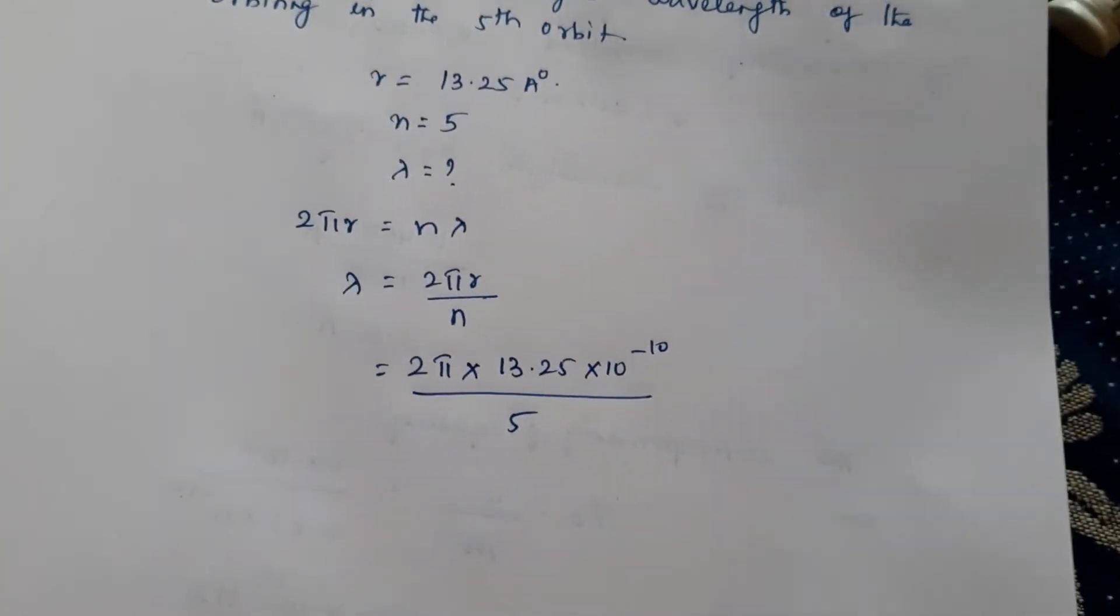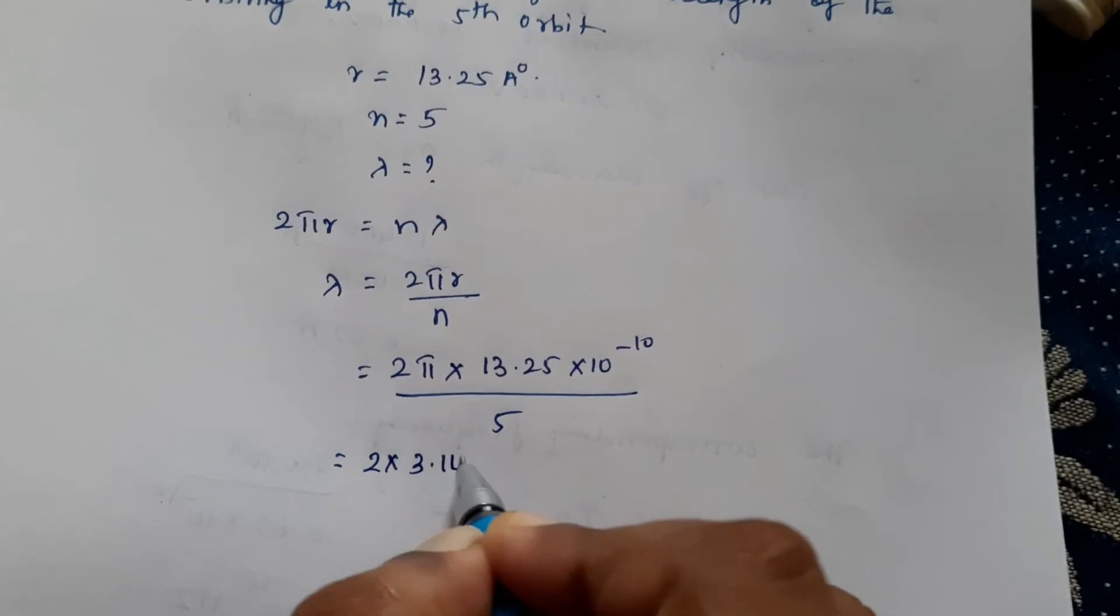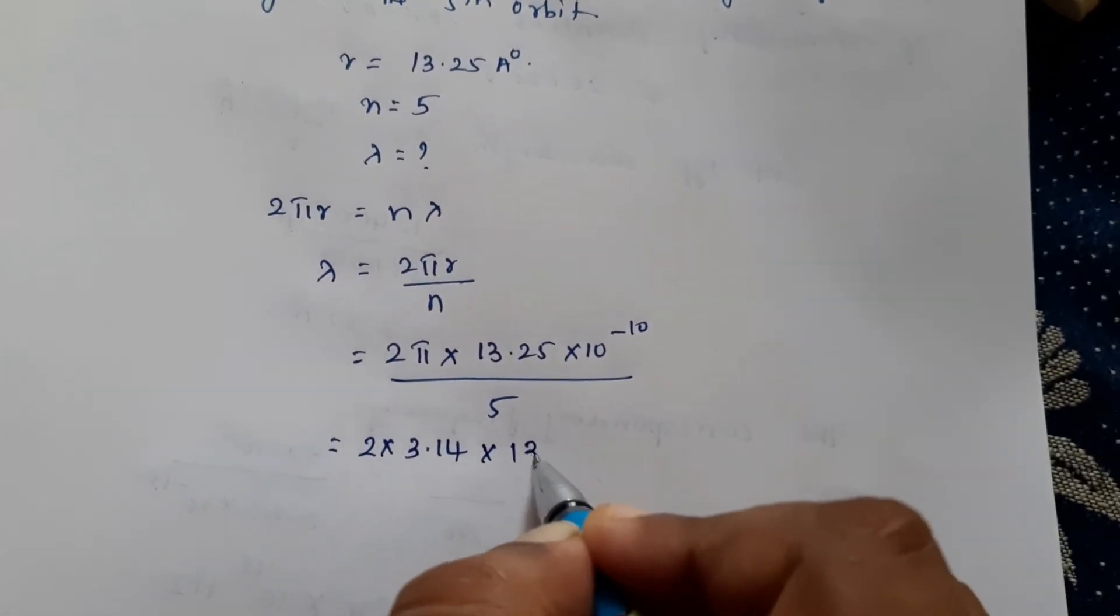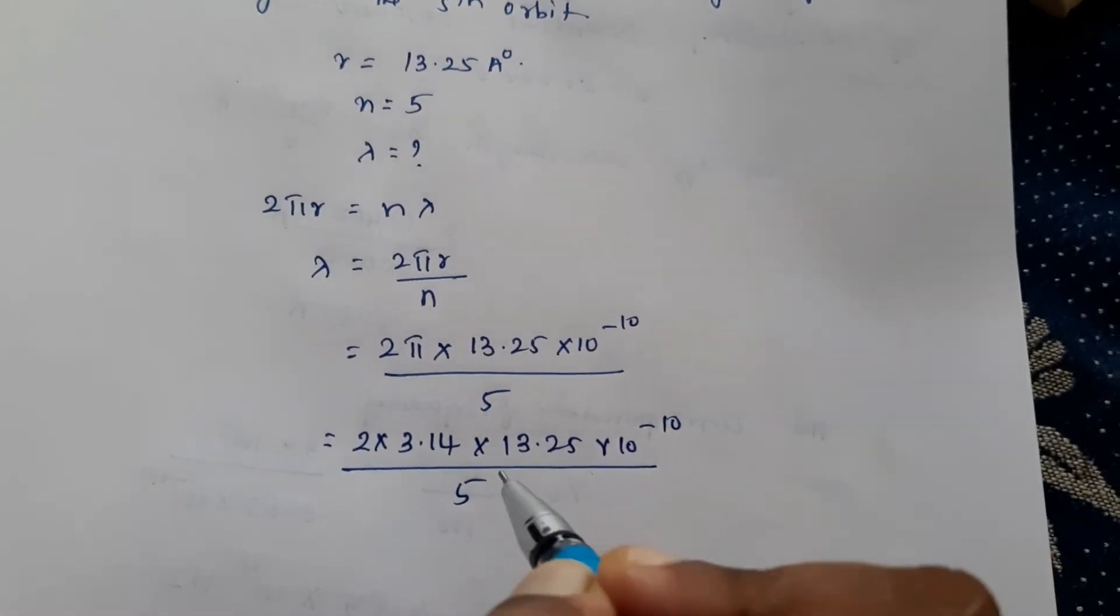This can be written as 2 into 3.14 into 13.25 into 10^-10 divided by 5.